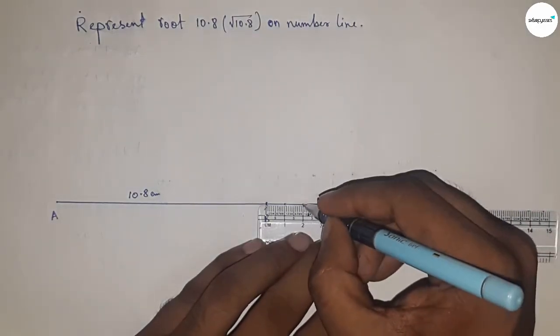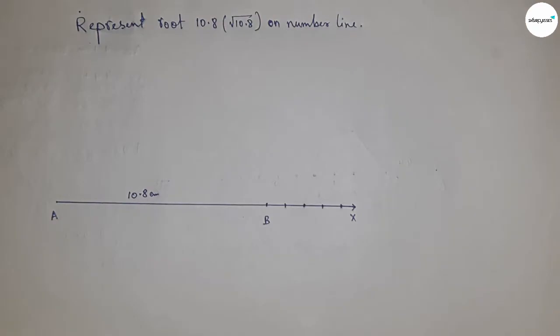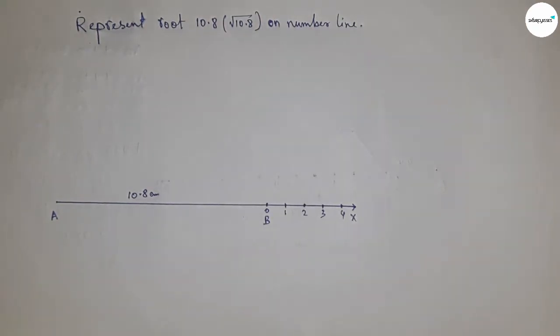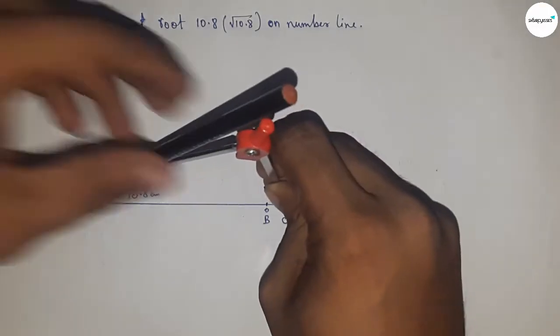Next, marking the numbers on the line from B to X by using scale. So this is 0, 1, 2, 3, 4 and so on, and taking this is C point. Next, having to bisect the line AC, so taking greater than half of AC.